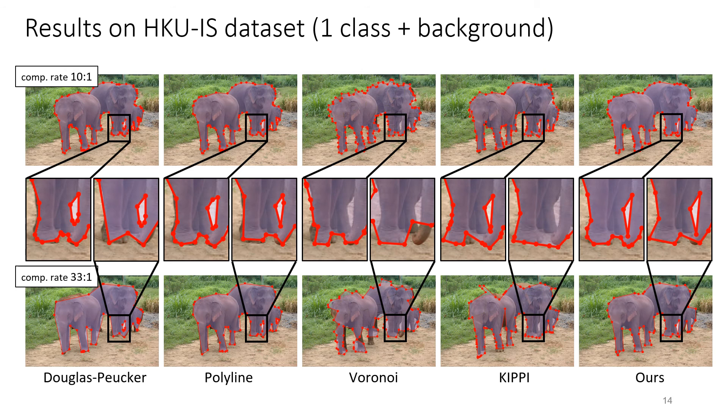Here is a visual comparison at low and high compression rates. Unlike other methods whose outputs drift from object silhouettes, our approach follows the object despite a decrease in polygon complexity.